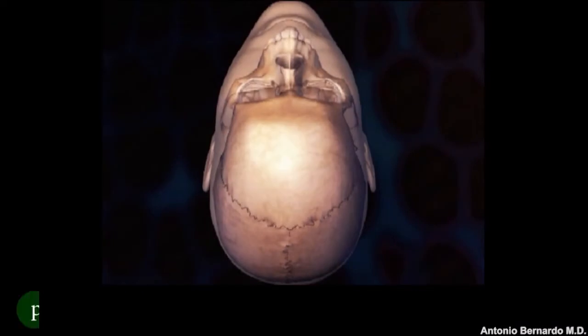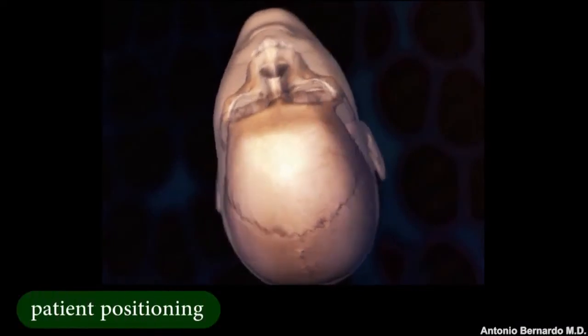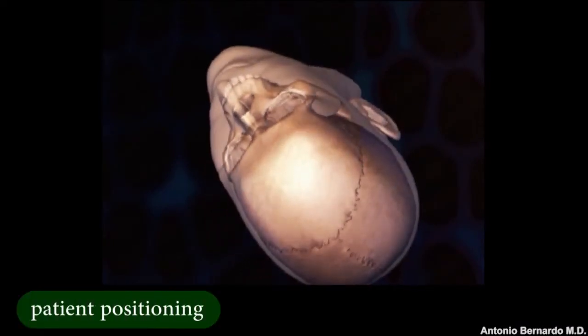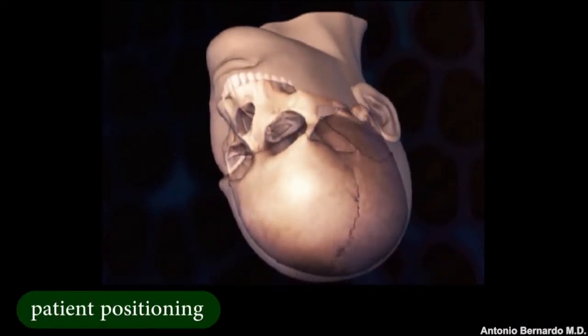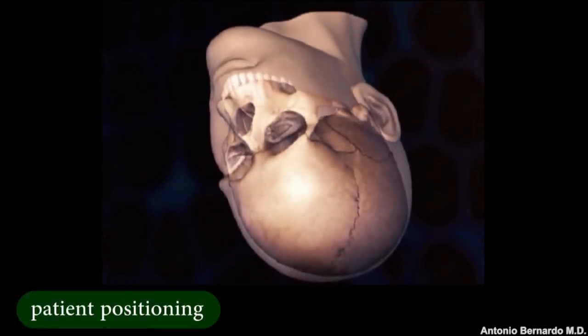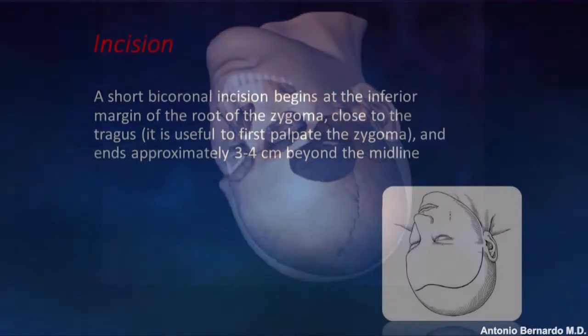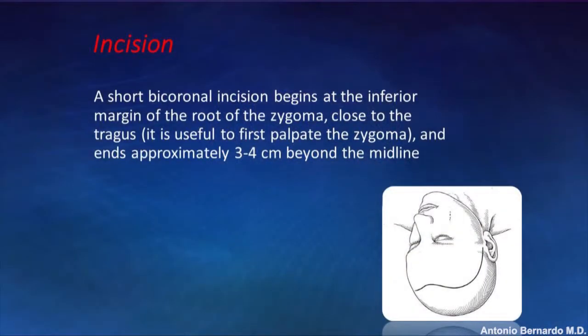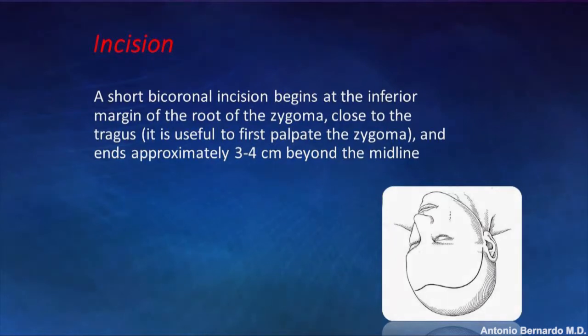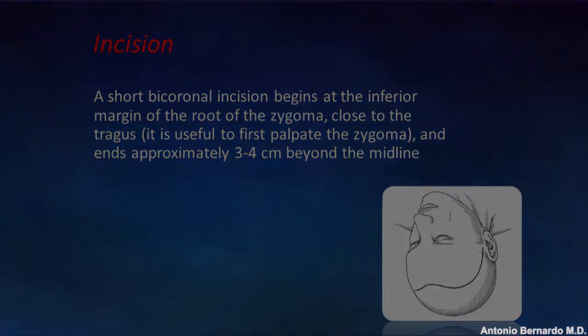The patient is positioned supine. The head is rotated 15-20 degrees with the vertex oriented slightly downward. The incision is a short bicoronal incision which begins at the inferior margin of the root of the zygoma and ends approximately 3-4 cm beyond the midline.